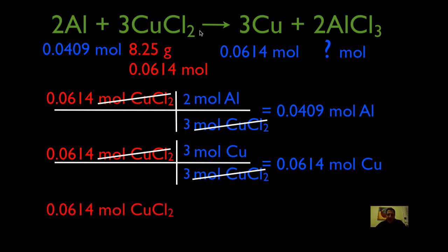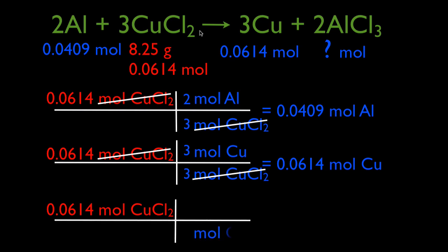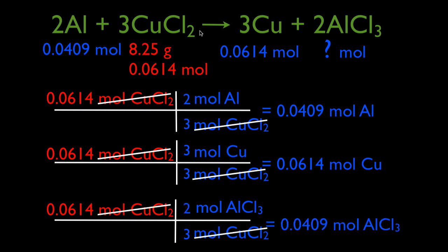We start again with 0.0614 moles of copper chloride. Copper chloride goes in the bottom, aluminum chloride goes in the top. The molar ratio is 3 to 2, so we cancel the moles and get 0.0409 moles of AlCl₃. You'll notice this value and the moles of aluminum are the same, because both aluminum and aluminum chloride have a coefficient of 2 — that's a 2-to-2, or 1-to-1 ratio.